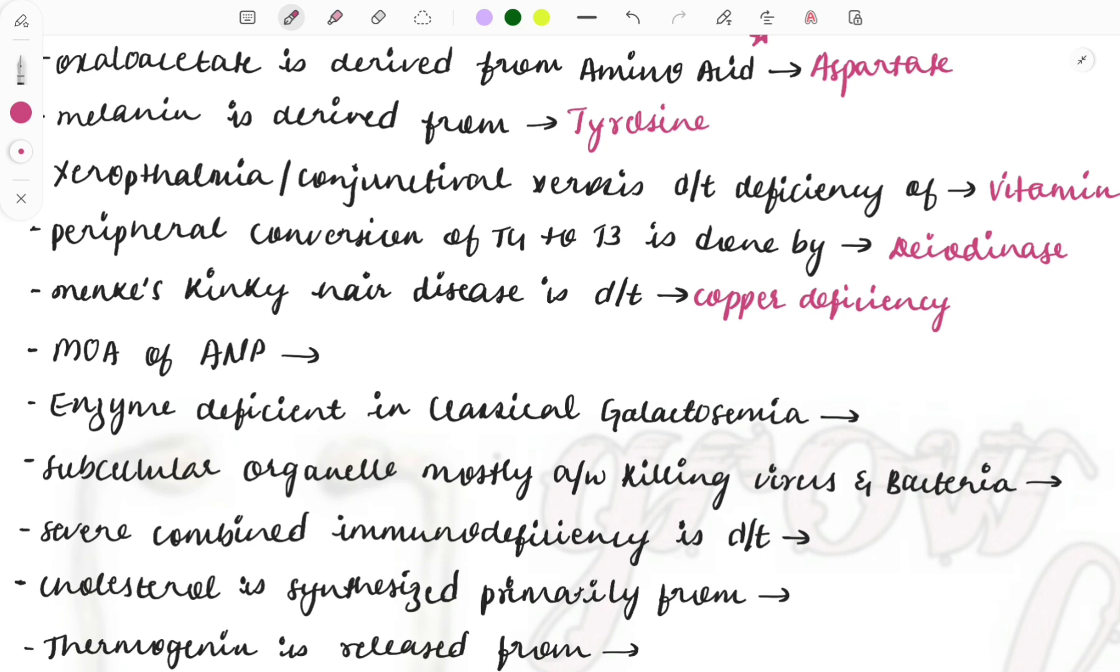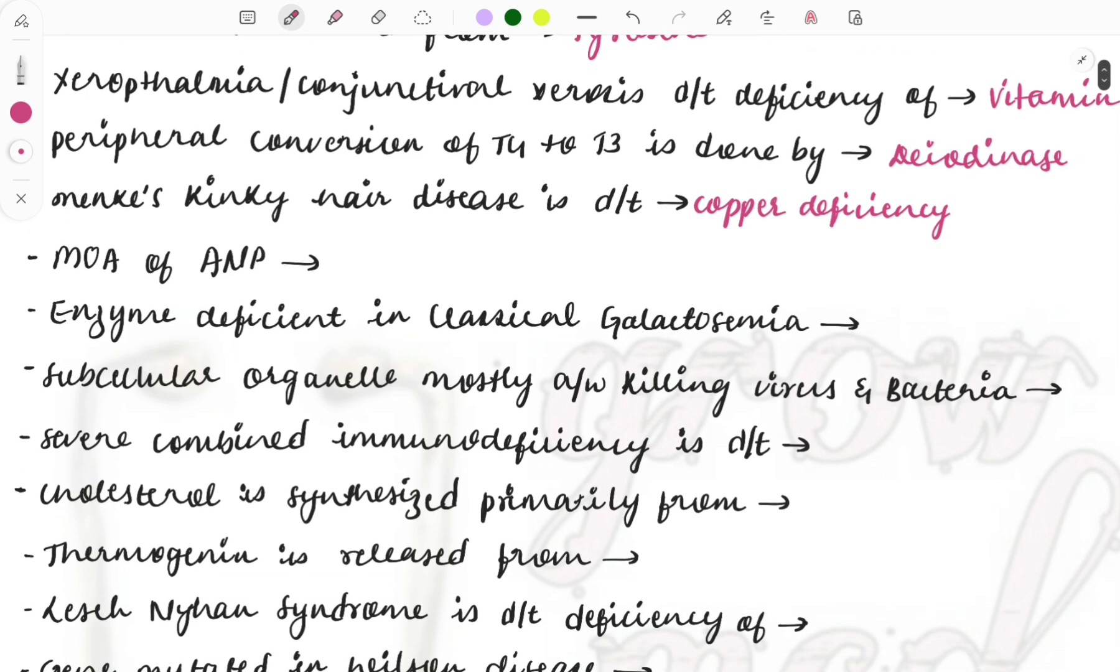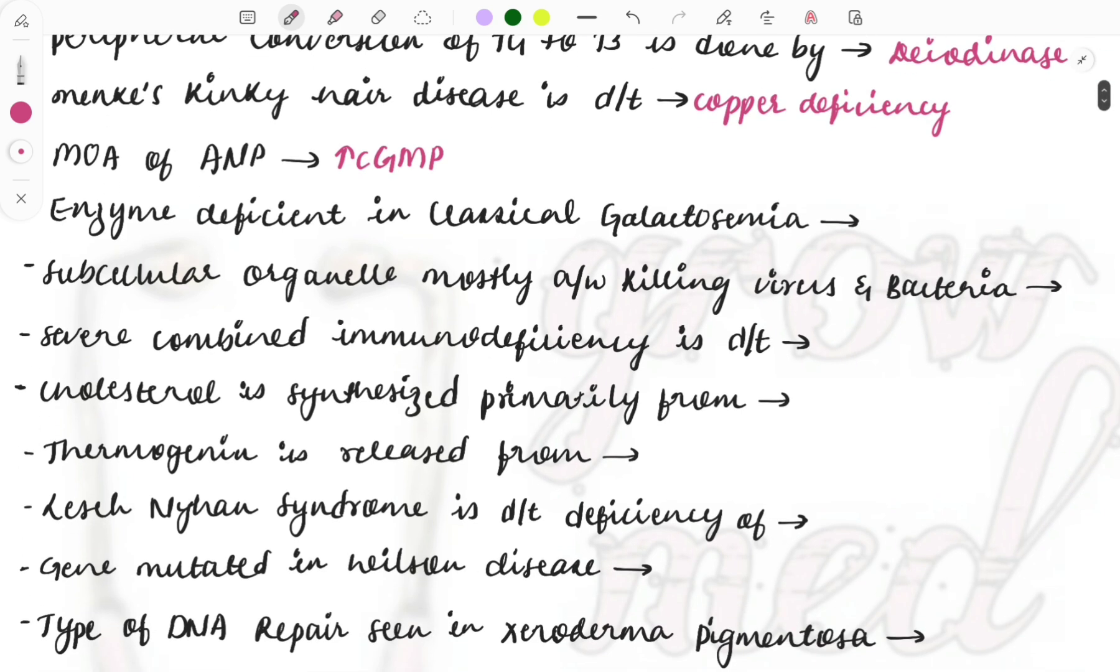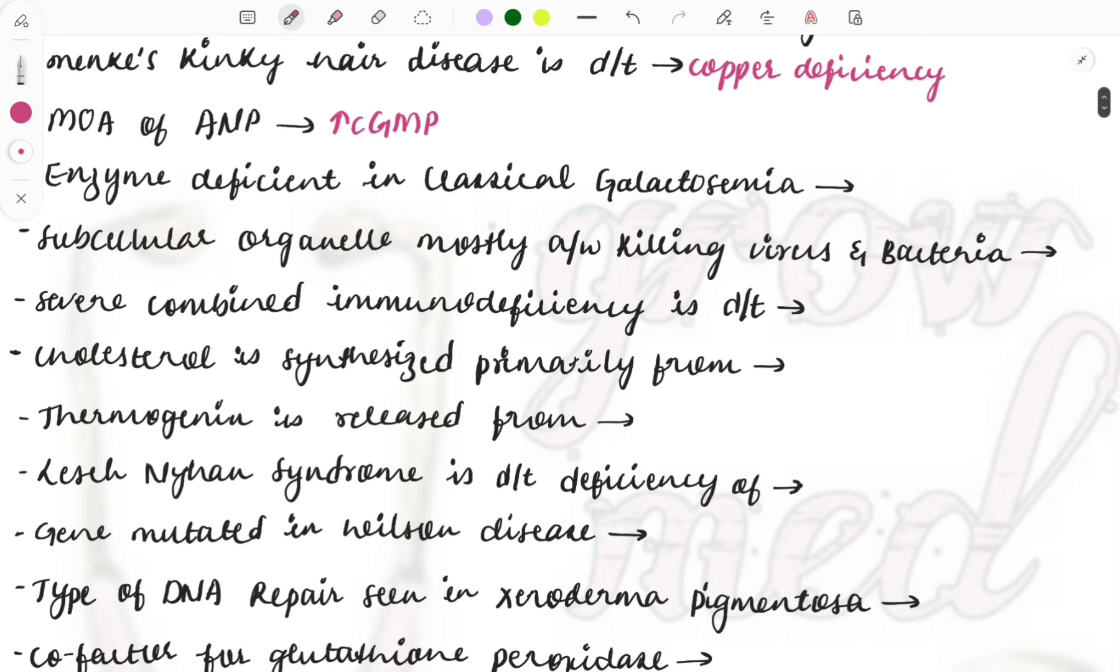Again note it down - micronutrient deficiencies like zinc deficiency causing acrodermatitis enteropathica, copper deficiency causing Menkes disease, likewise excessive copper in Wilson's disease - this one is also important. Mechanism of action of ANP, atrial natriuretic peptide: how does it act? It acts by increasing the cyclic GMP, and cyclic GMP is a secondary messenger. Just remember that ANP acts by increasing cyclic GMP.